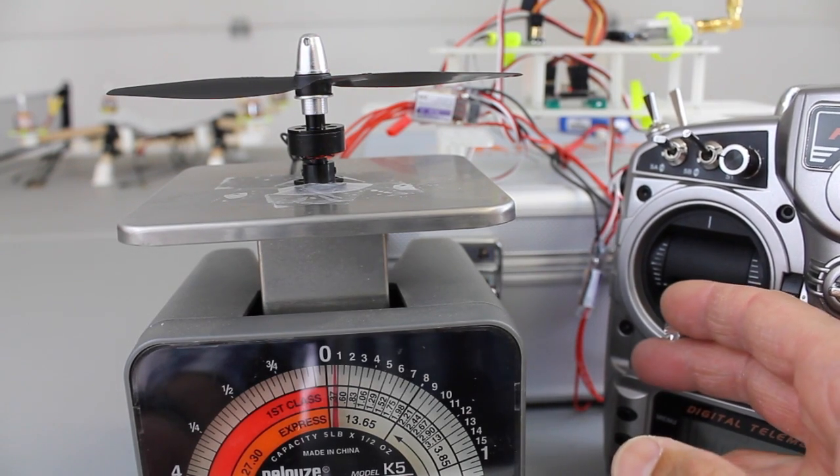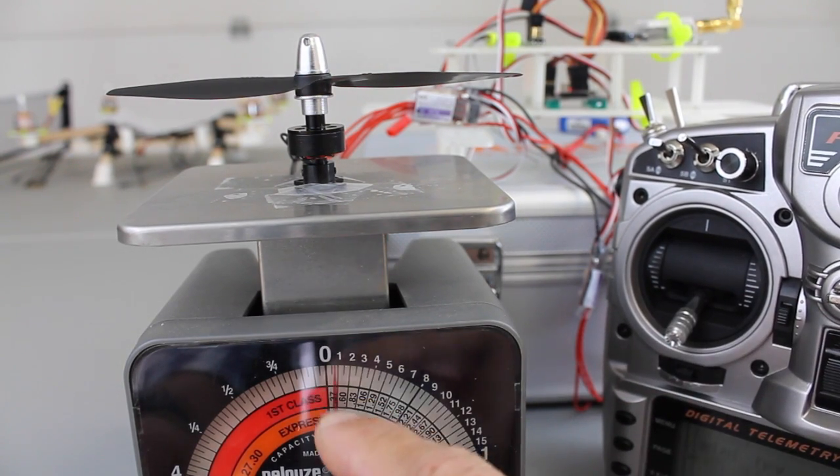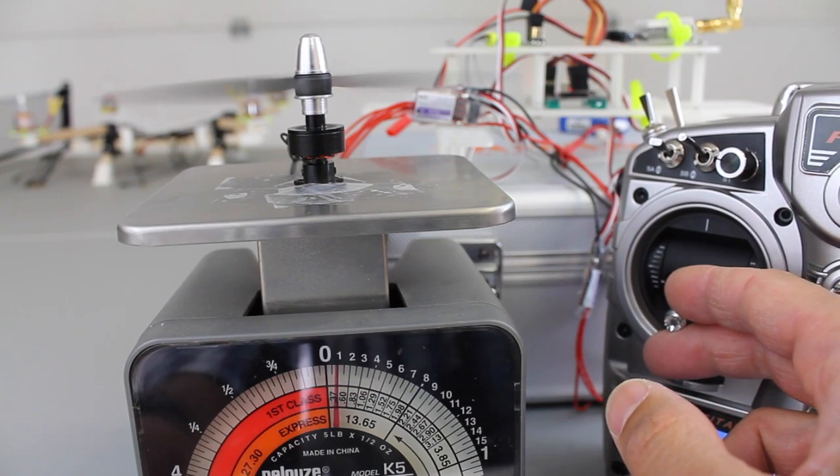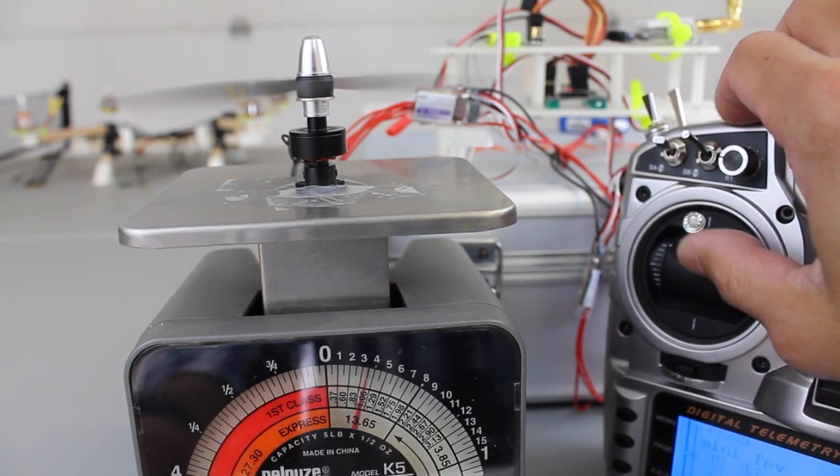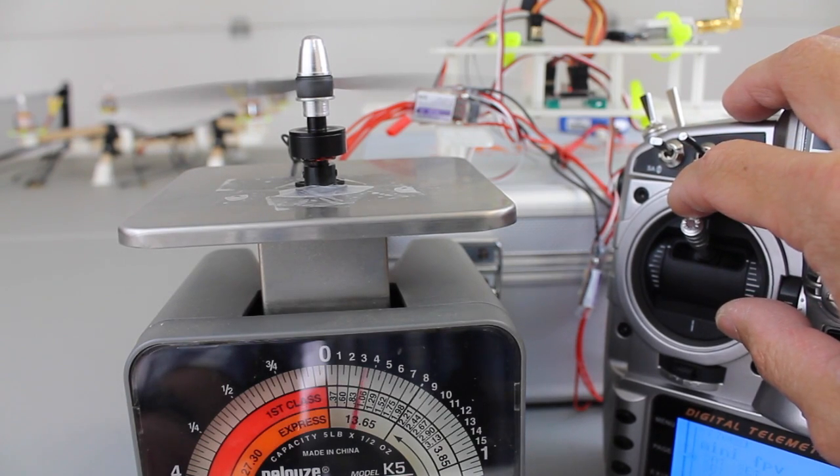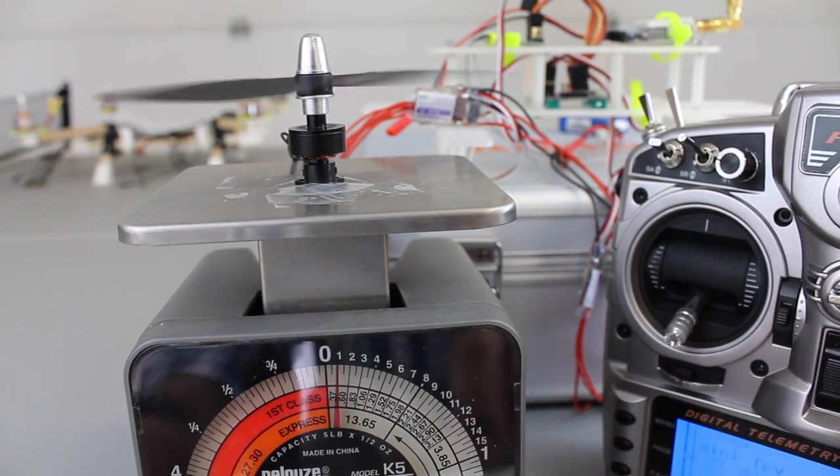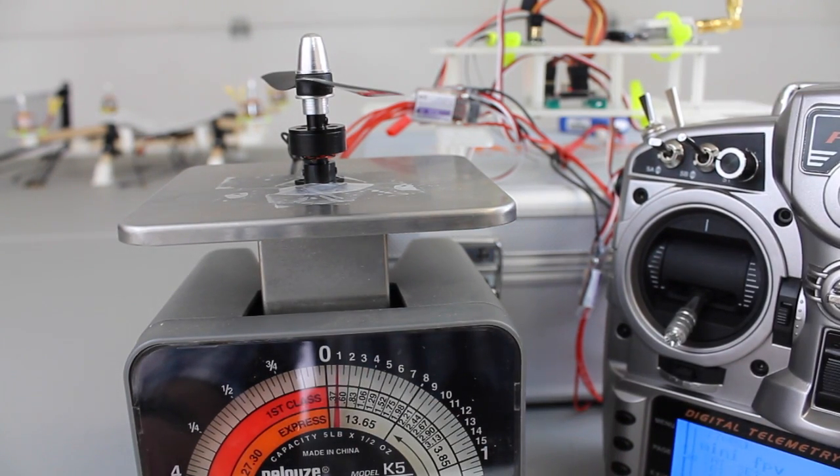Let me go ahead and throttle up and let's see. Weight wise we started about the same as we did with the Turnigy. Let's go up to full throttle on the 2S. So we're right about three and a half ounces on the 2S battery.